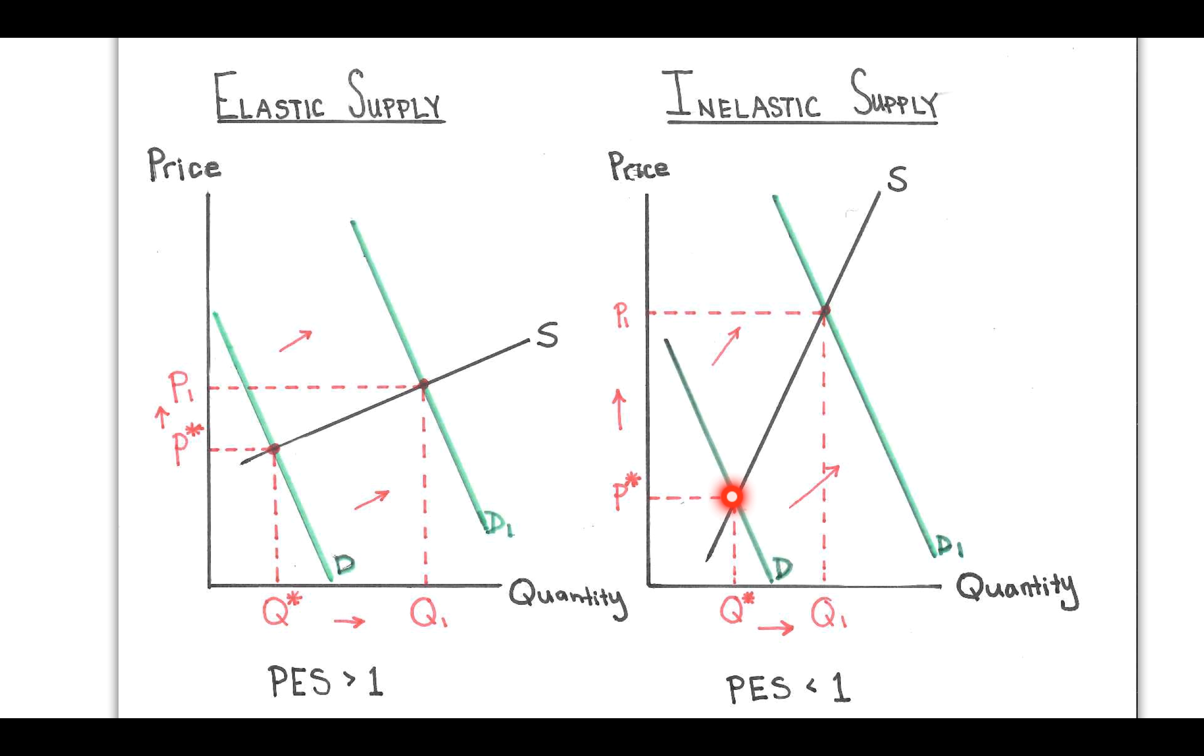And when anything moves, I always insist that students draw arrows, whether that's price increasing to P1, quantity going from Q star to Q1, or the demand curve shifting.